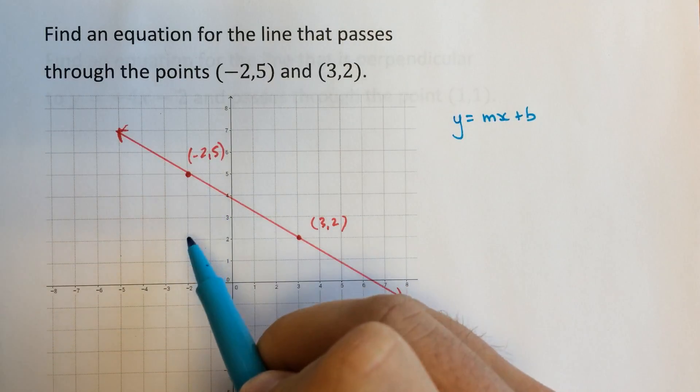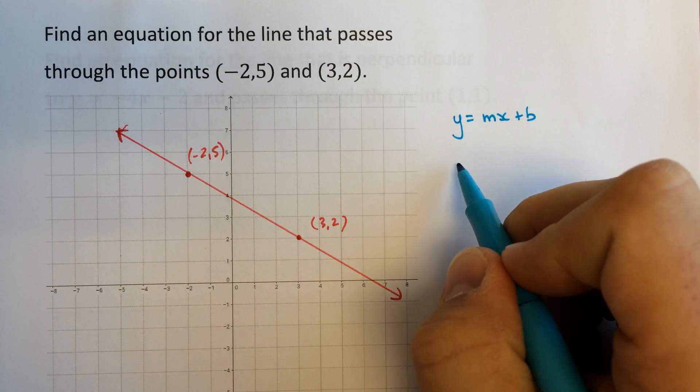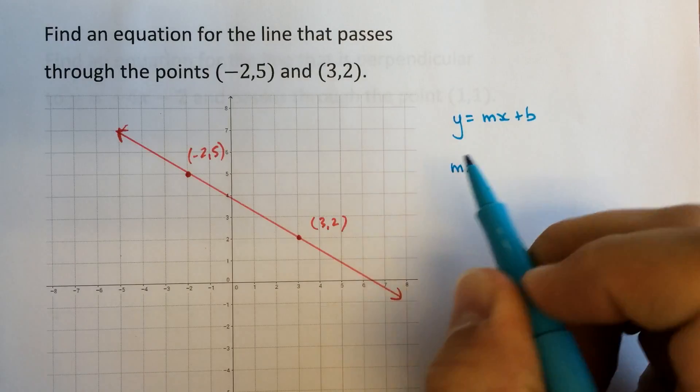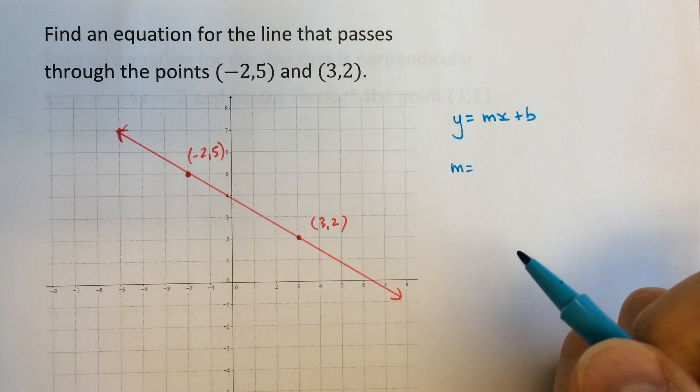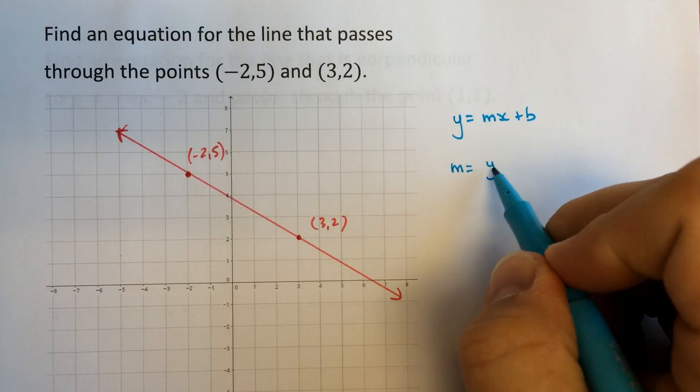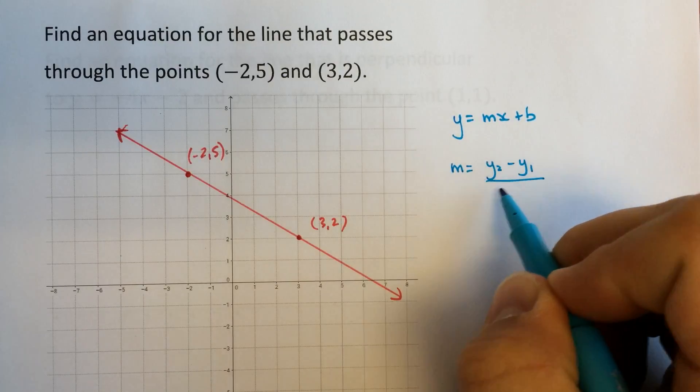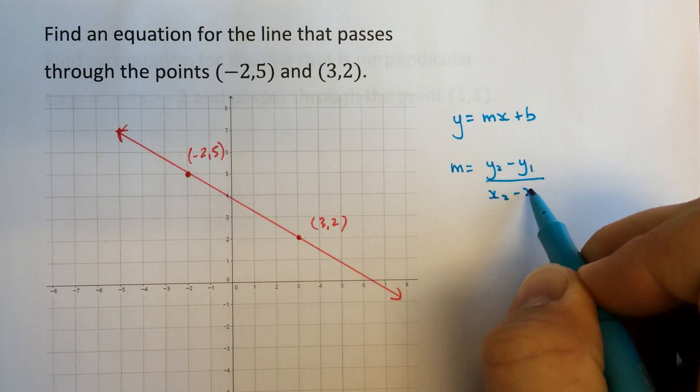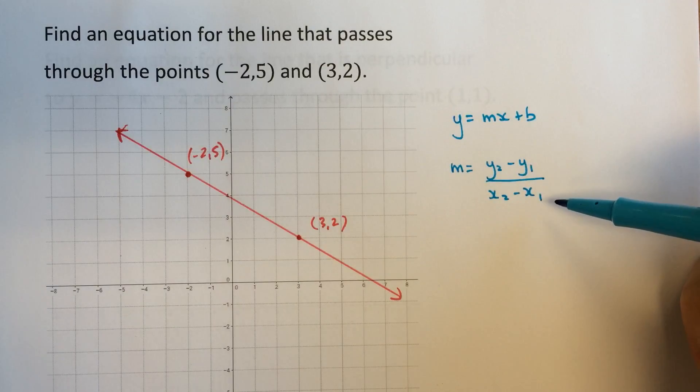You can do this right on the graph here by sort of counting. Let's do it algebraically, though. The slope is equal to the difference in the y-values divided by the difference in the x-values. So we'll often write something like this. Y2 minus y1 over x2 minus x1. We call that the rise and the run.